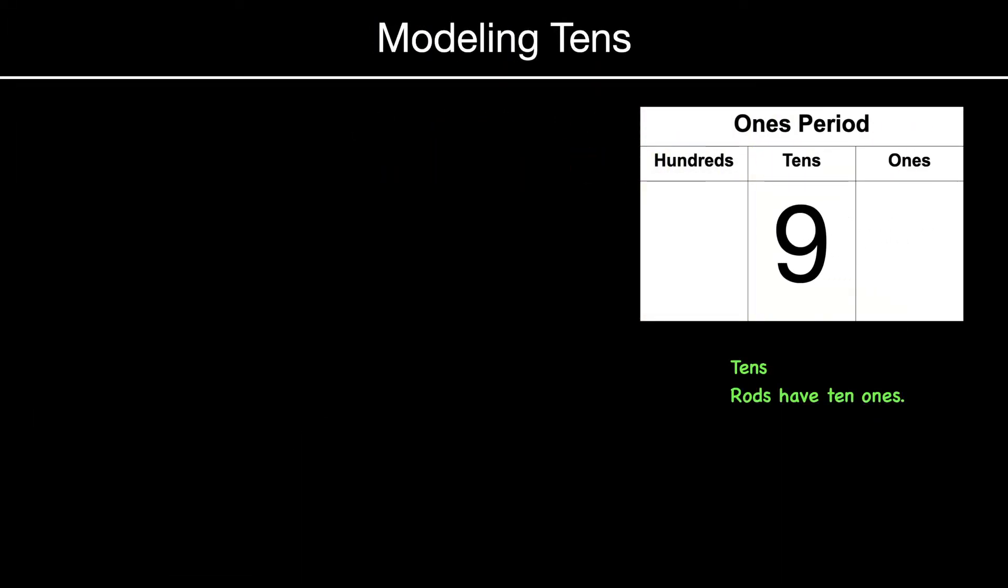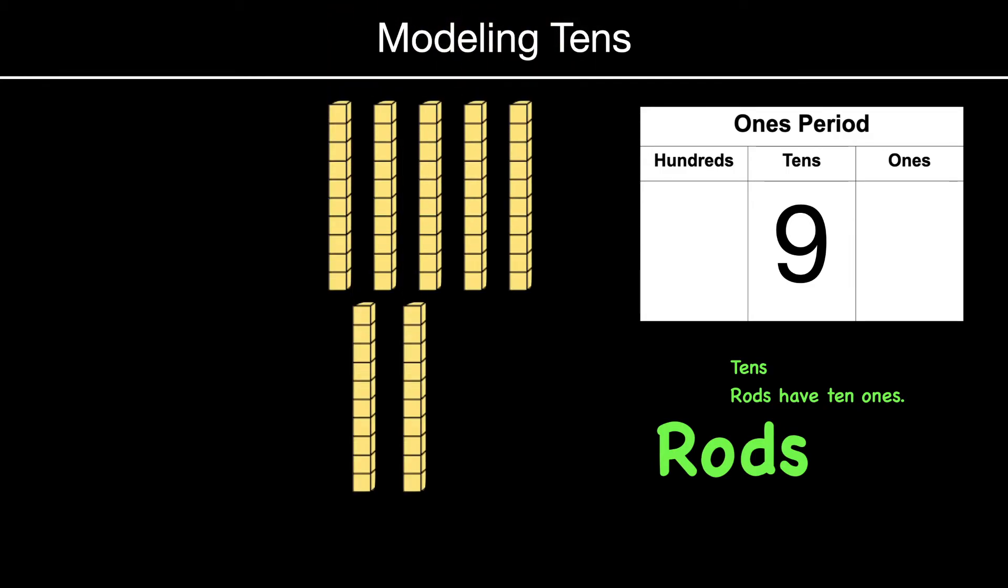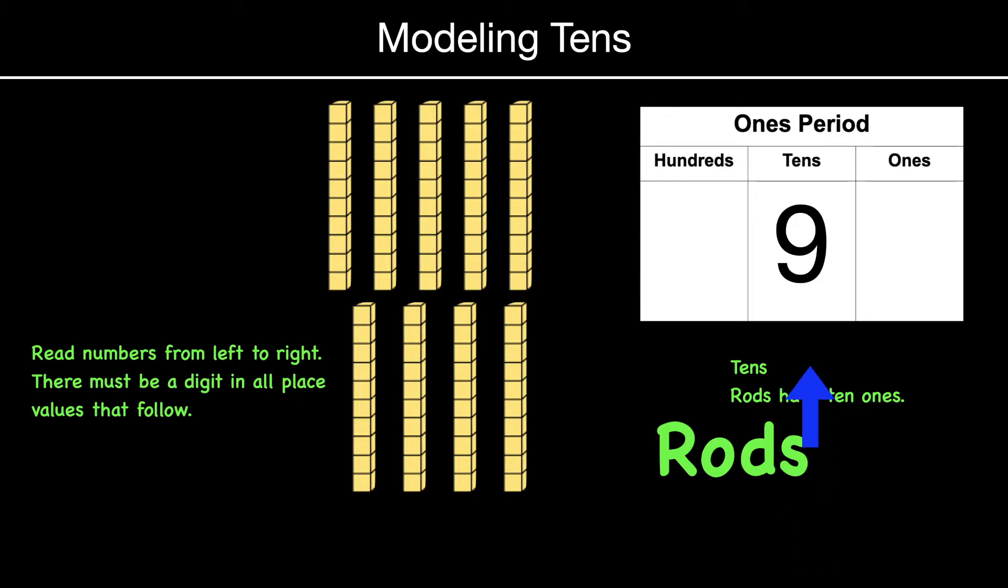If we move that nine over to the tens, we use something called rods, and rods are just equal to ten ones. And so nine tens would look like that, and it would be equal to 90 because we would pop that zero in into the ones place value.